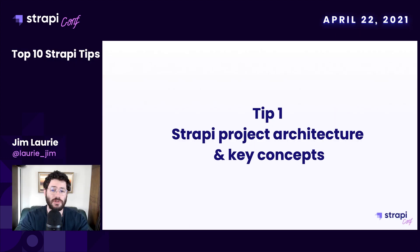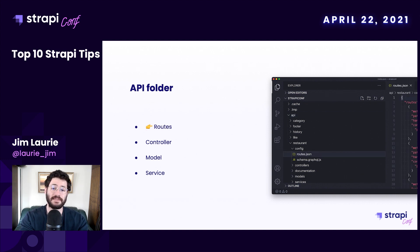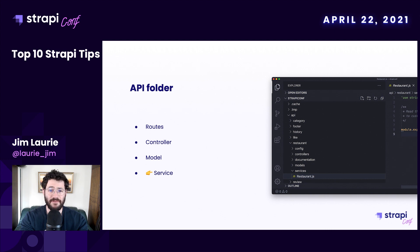Let's start with the architecture of a Strapi project. In a Strapi project you will find an api folder. This folder contains your collection and single types. A content type is composed of various elements: routes, controllers, models, and services. Controllers and services are empty files — it works with a blueprint system. The core of Strapi manages the default logic.